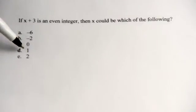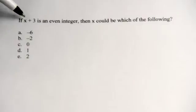When we get to choice D, 1, when we plug in 1 up here, 1 plus 3 is 4. 4 is an even integer. Choice D is the only one that results in an even integer. So choice D is correct.